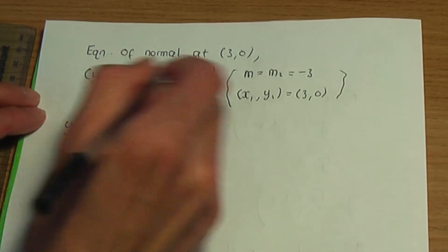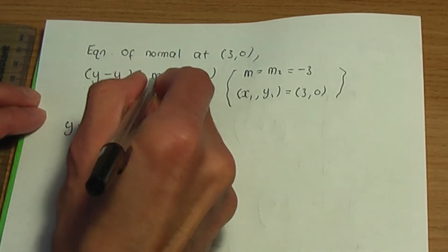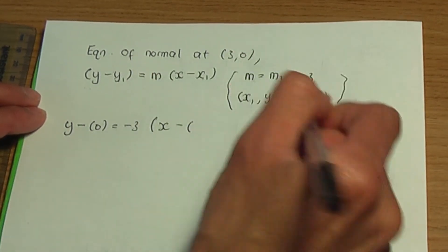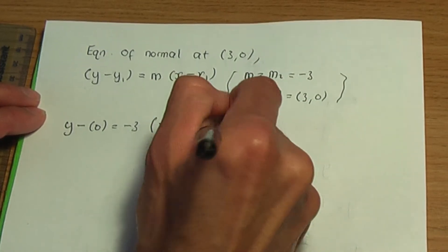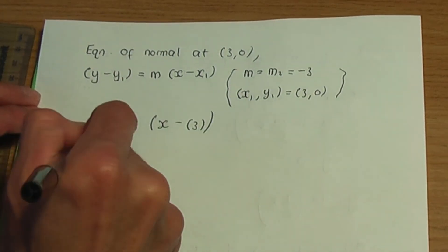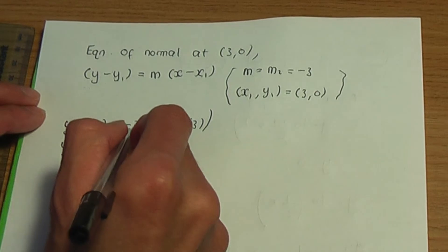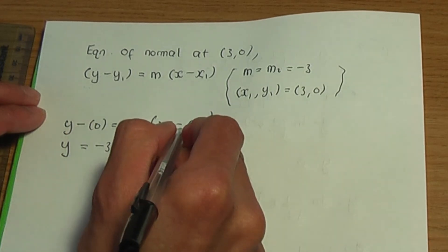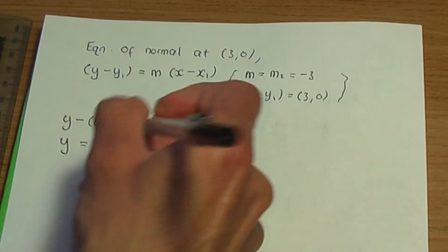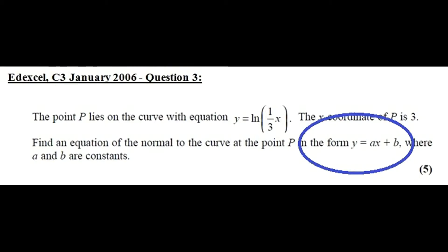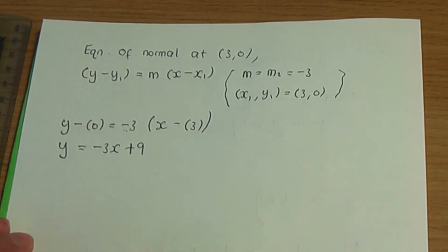Substituting into the formula: y minus 0 equals minus 3 times (x minus 3). Expanding the brackets: y equals minus 3x plus 9. The question asks for the answer in the form y equals ax plus b, and we have it in its required form.